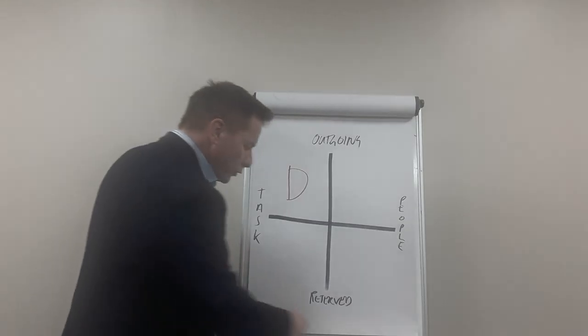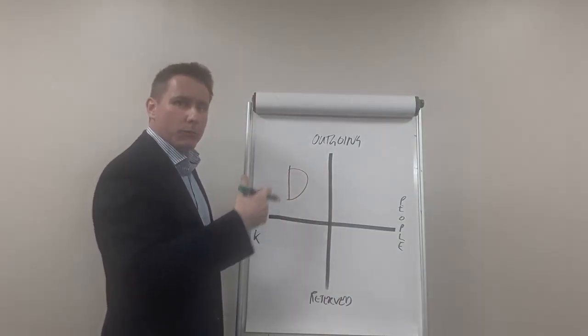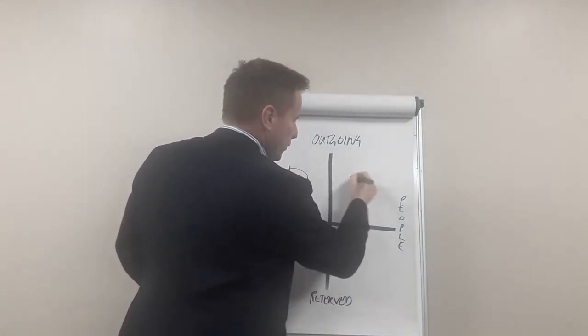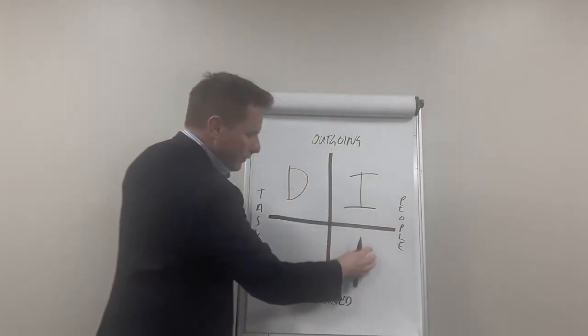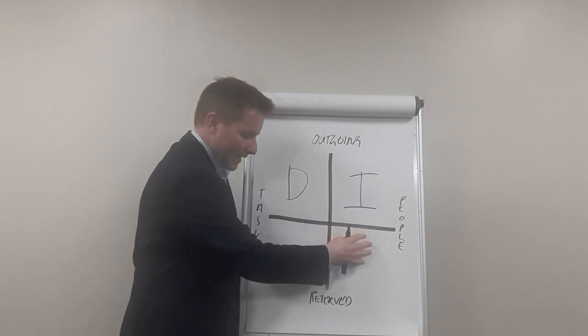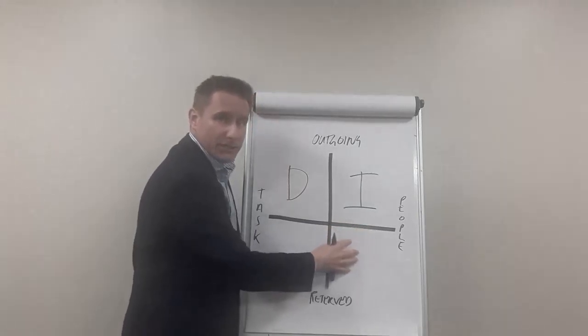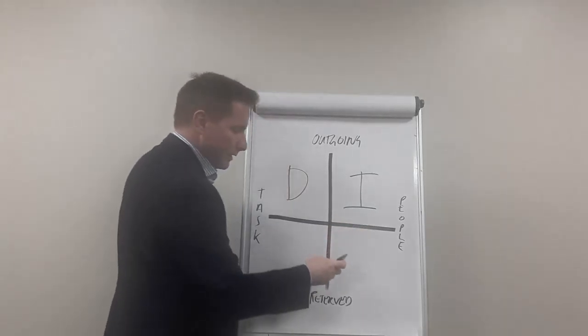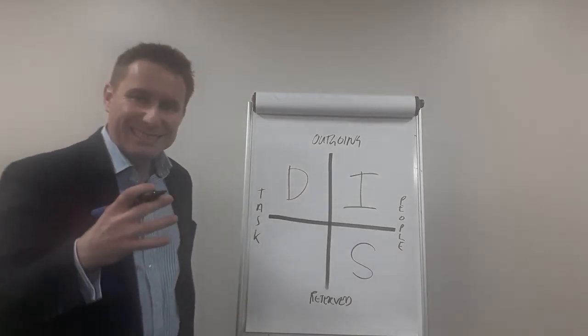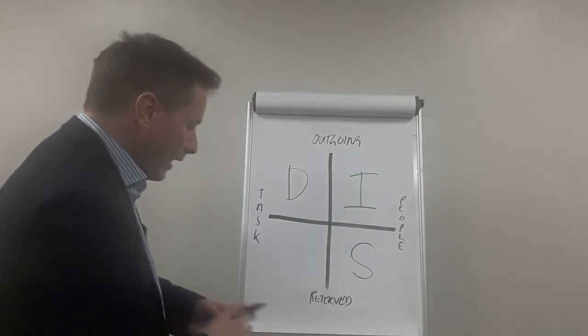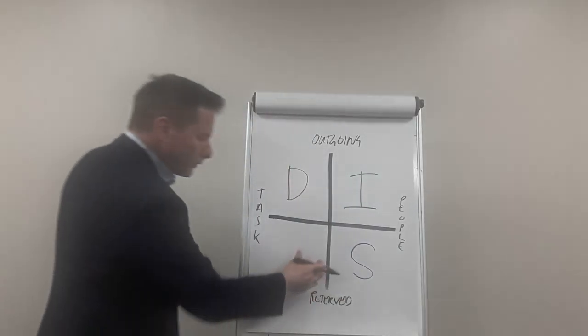Those people who are more outgoing and task-focused, we call Ds or dominant people. Those people who are more outgoing and people-focused, we call Is.